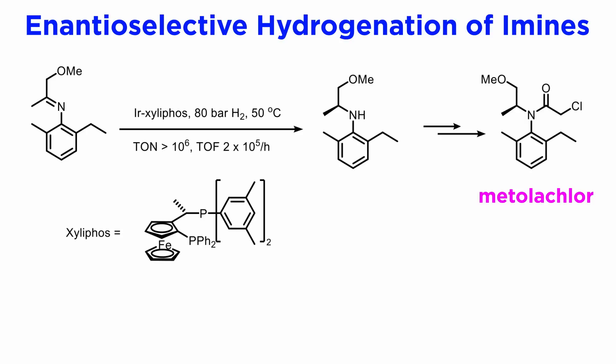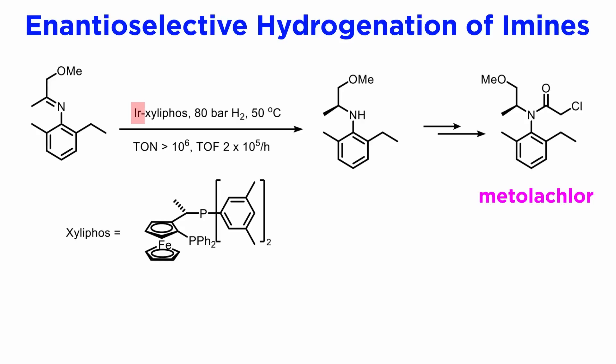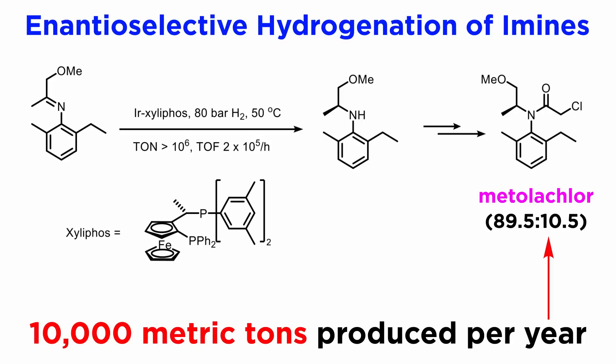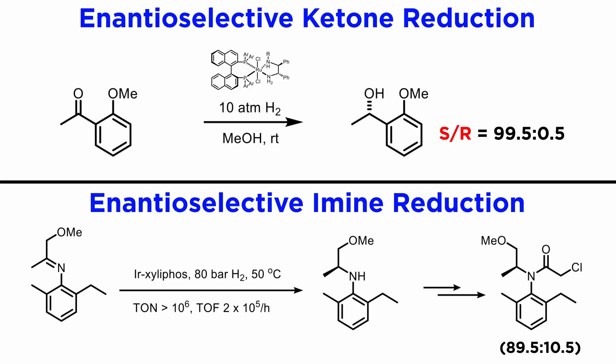Perhaps the most famous, and certainly the one working at the highest volumes, is the hydrogenation applied to the herbicide metolachlor. The catalytic hydrogenation step took many years to develop. It uses iridium as the metal and achieves a stunning turnover number of over one million. Each molecule of catalyst can process 200,000 molecules of substrate per hour — its turnover frequency (TOF) — achieving an enantiomeric purity of almost 90%. Over 10,000 metric tons of metolachlor are produced each year by this method, and given the obligatory low cost of agricultural products, this process must be highly economical.